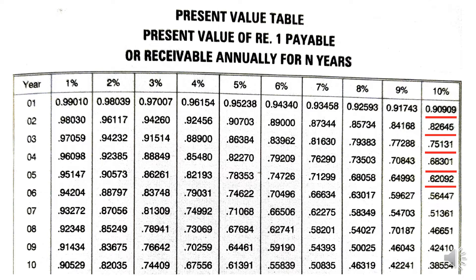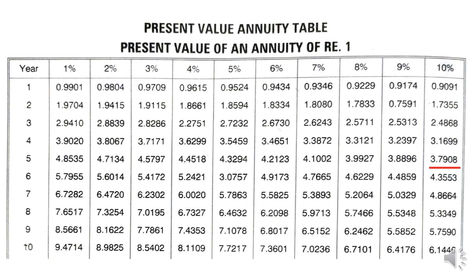Here is the present value table. If you see the values highlighted at 10%: 0.909, 0.826, 0.751, 0.683, 0.621 — these are the values we used. This present value table is available at the back of your textbooks or can be downloaded from the internet. Similarly, the present value of annuity table at 10% for 5 years shows 3.790, which is the cumulative value of the earlier individual factors. I will try to keep PDF files of these tables in the description box so you can download them.